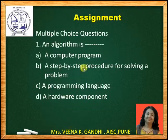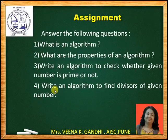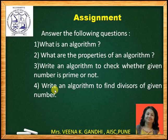Let us see some assignments. Multiple choice question: what is an algorithm? You can write the correct option in the comment box. Second, which of the following is a property of an algorithm? The options are: ambiguity, quality, finiteness, reliability. You can write the correct option in the comment box. Also try these assignment questions: what is an algorithm? What are the properties of an algorithm? Write an algorithm to check whether a given number is prime or not. Write an algorithm to find the divisors of a given number. Thank you for watching this video.